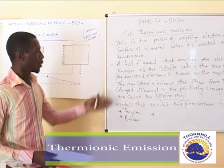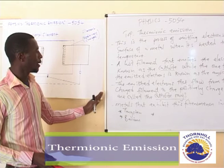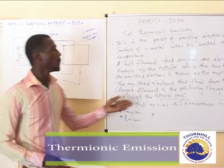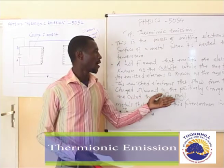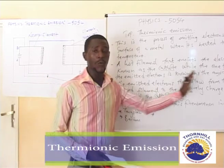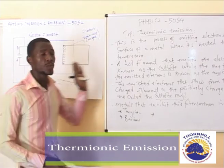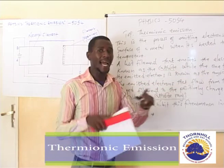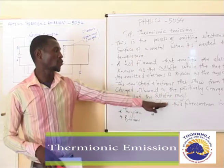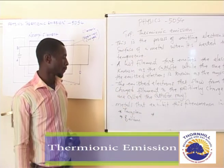Coming back to our points, the emitted electrons — the electrons that flow from the negatively charged filament to the positively charged filament after attraction — those electrons are the ones we refer to as cathode rays.